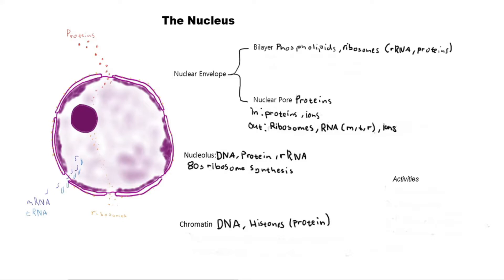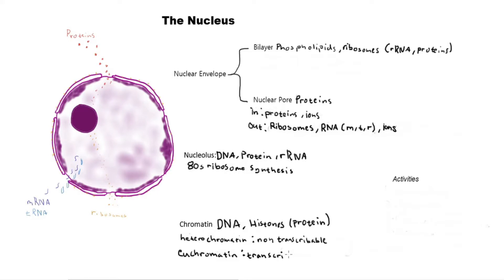Heterochromatin groups at the periphery but doesn't cover the pores, so things can still come in and out. Let's write that down: heterochromatin is non-transcribable, and euchromatin is transcribable. Remember, both are still chromatin — still made of DNA and histones. Also important to note: the DNA in the nucleus is linear DNA. Recall that we have both circular and linear DNA in eukaryotes — all the DNA in the nucleus is linear.